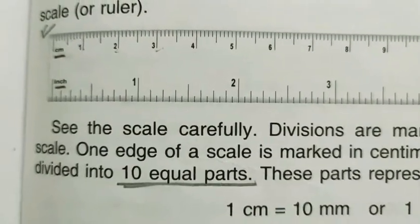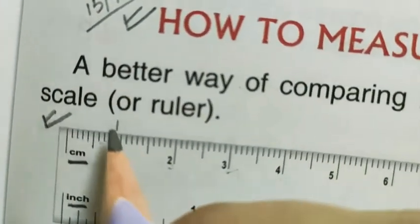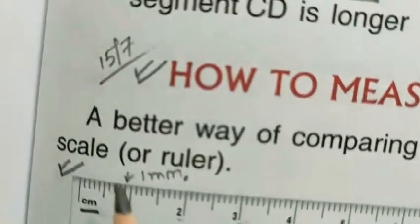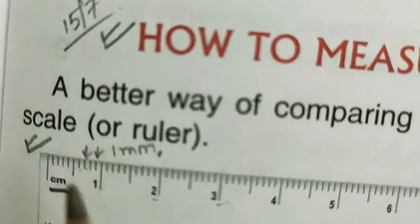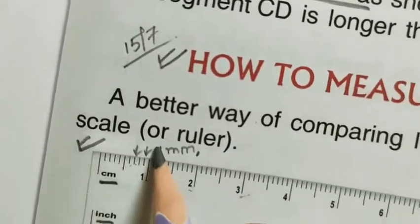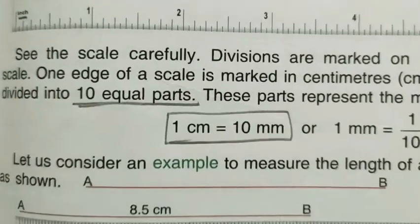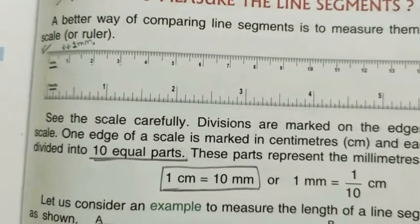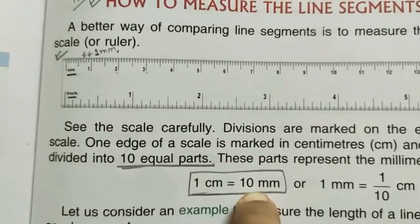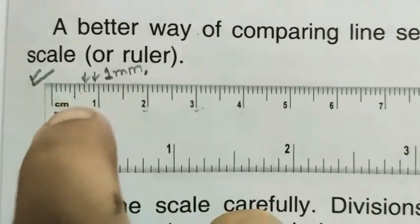Each of the divisions are 1 mm. It is 1 small division equals 1 mm. As we know, 1 cm is equal to 10 mm. We learned this in our previous class about conversion of length. 1 cm contains 10 number of millimeters, so there are 10 equal parts.